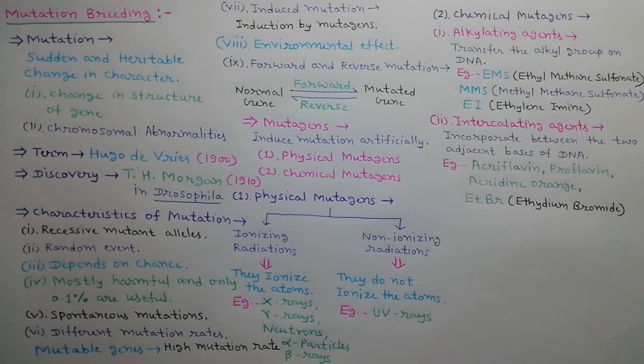Second is intercalating agents. These chemicals incorporate between the two adjacent bases of DNA. This process is called intercalation. For example, acriflavin, proflavin, acridine orange, and ethidium bromide.